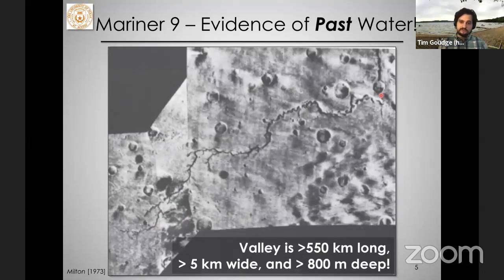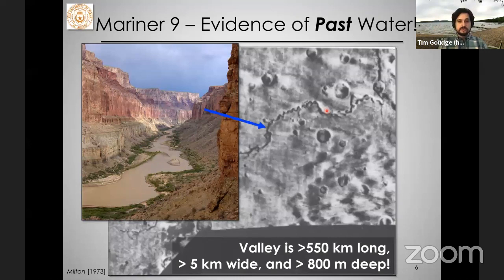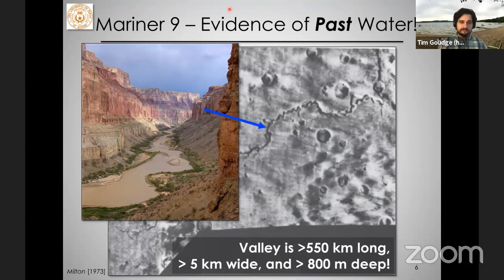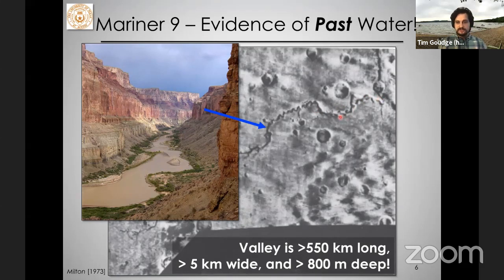As exploration of the Red Planet continued, in the early 1970s Mariner 9 found the first evidence of past liquid water. What we're looking at is a mosaic of several images showing a very large river valley, traced out here. This valley is over 500 kilometers long, several kilometers wide, and in places more than a kilometer deep. This is the evidence of past water — large-scale topographic features analogous to the Grand Canyon, carved by the Colorado River.